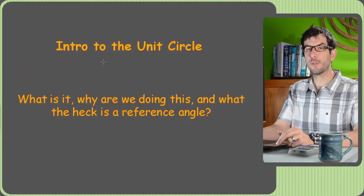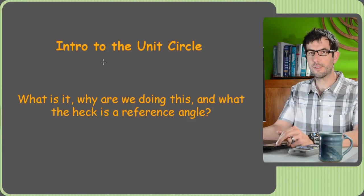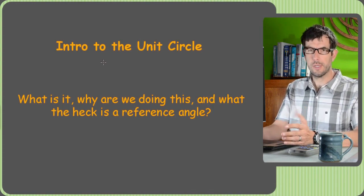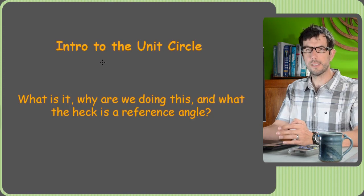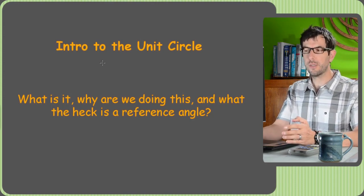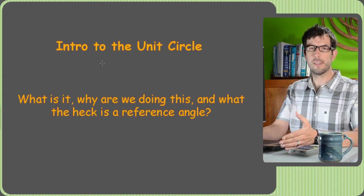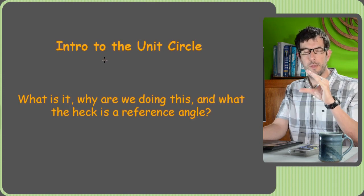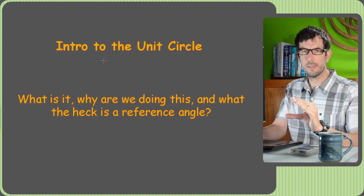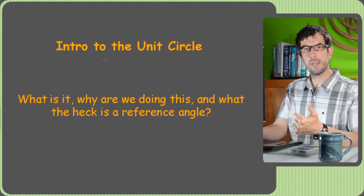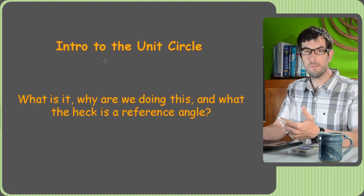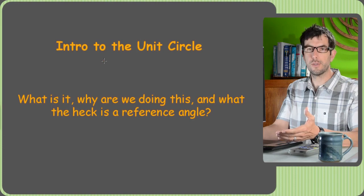Here we are, ready for all that SOHCAHTOA work to pay off in the unit circle. If you've been in trig already, you know the unit circle is how we find sines, cosines, and tangents of angles bigger than 90. Using SOHCAHTOA, you can only find the sine and cosine of an angle that fits inside a right triangle, and those angles are always less than 90 degrees. So if you want to find 130 degrees, 5,000 degrees, a negative number, or even zero, you can't do it without the unit circle.